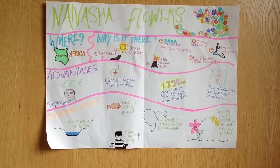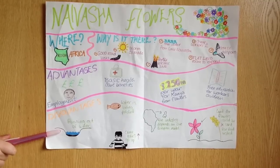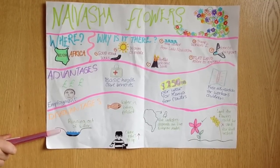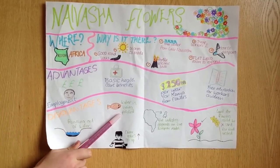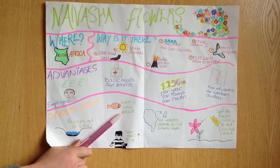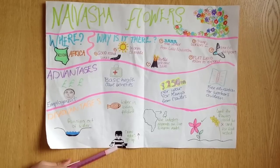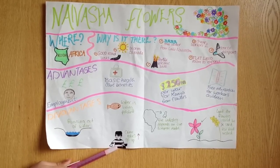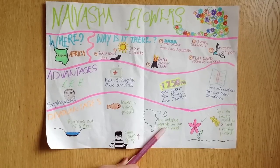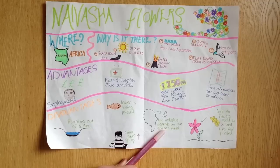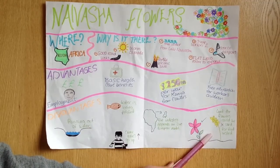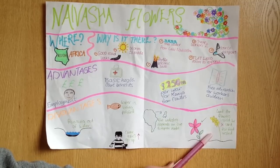However, there are also a few disadvantages of flower production in Kenya. Lake Naivasha is running out of water because the industry is extracting too much. The lake is becoming polluted by the waste water from the flower industry that contains pesticides. Too many people have gone to Naivasha to find employment and many are unemployed. Crime rates have increased. The industry is heavily dependent on the European market — if people in Europe stop buying roses and flowers, many people in Kenya will lose their jobs. Land that could be used for food production is being used for flower production, and many people in Kenya do not have enough food to eat.